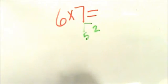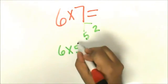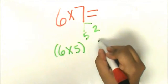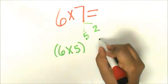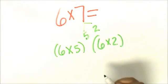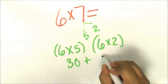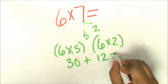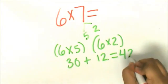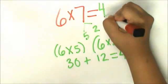I'm going to multiply 6 times 5 and I'm going to multiply 6 times 2. 6 times 5 is 30, 6 times 2 is 12, and my answer is 42. The product of 6 and 7 is 42.